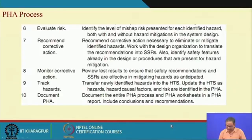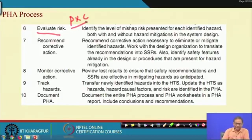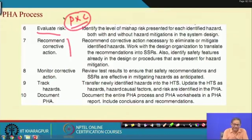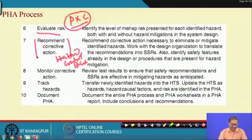New steps in PHA not present in PHL include evaluating risk. Risk equals probability times consequence (P × C). This principle is applied for every hazard. Then recommend corrective actions to minimize risk. The concept of hazard control hierarchy is introduced to provide control measures once risk is evaluated.